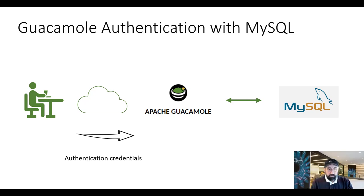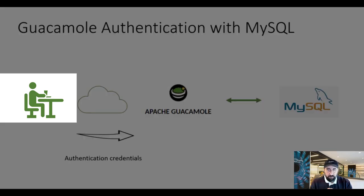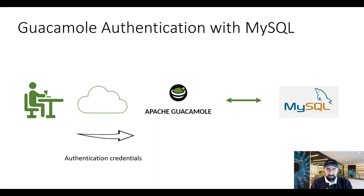Hi guys, welcome back. In the previous videos on Apache Guacamole, we configured the user.xml file, which is the user mapping file where all authentication and connection settings are defined. What we'd like to show you in this video is how to authenticate users using other methods — for example, LDAP, RADIUS, or single sign-on.